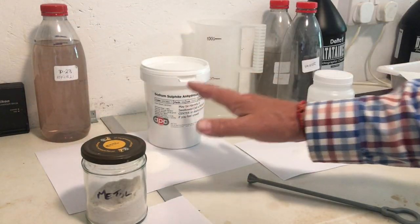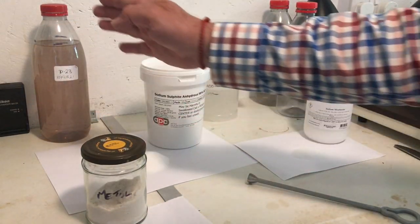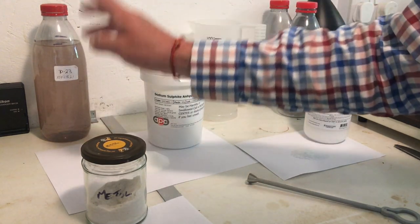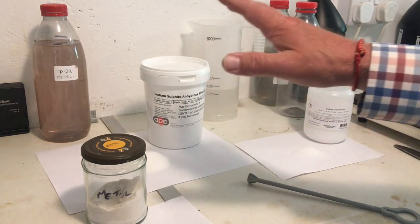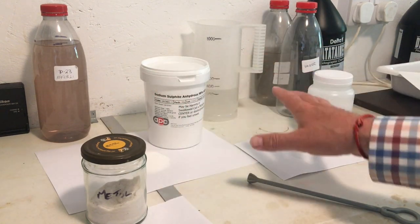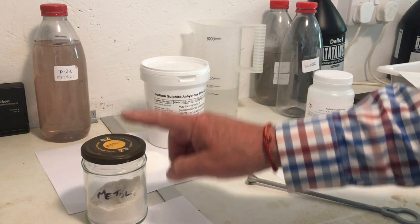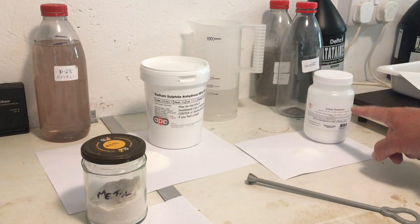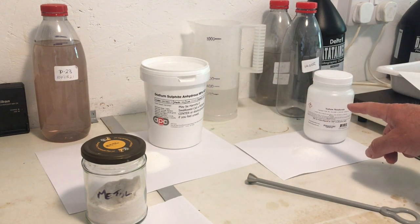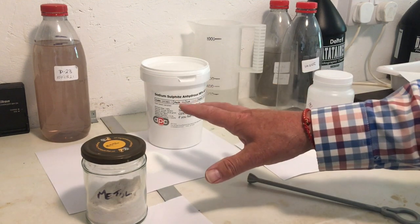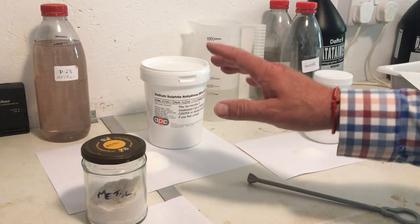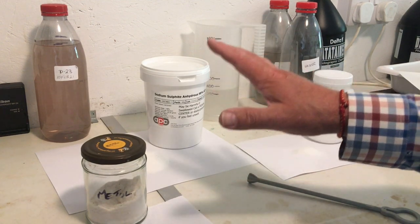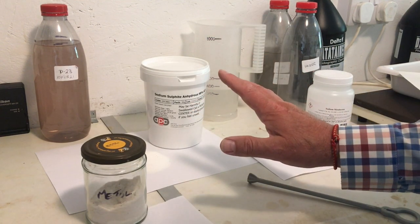So we're going to focus today on making the replenisher. We've made the D23 in a separate video, so if you want to make this developer check that video out. For the replenisher we're going to need these three chemicals. I'm going to show you how to put these together to make 500 milliliters of replenisher. That's important—it's 500 milliliters that I'm going to show you, not one litre.